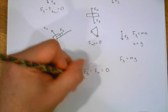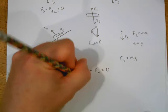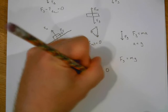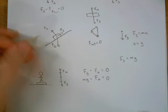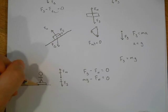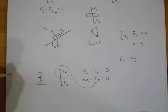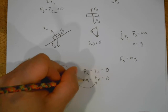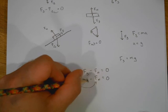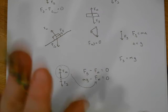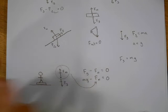hence Fg equals mg. If I was to write this, I would get mg minus Fn equals zero. If I knew what the scale reading was, which is this, I could plug that in and solve for the mass because I know I'm on Earth.